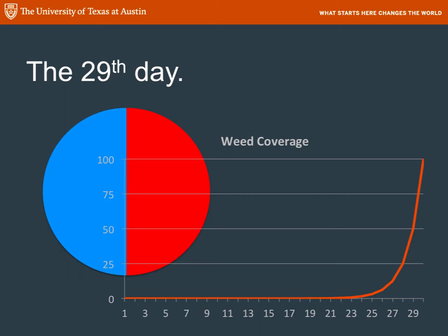Half is just one doubling away from disaster. And that is why the mathematics of population growth are so important. Look at your weed coverage on a linear graph — you can see that it didn't look like anything until the 27th or 28th day. The 29th day was still only half. It was the 30th day that you woke up to find disaster, completely unprepared for it.